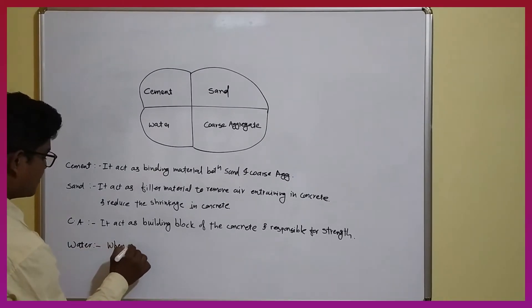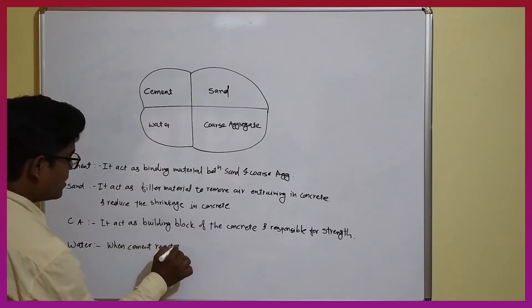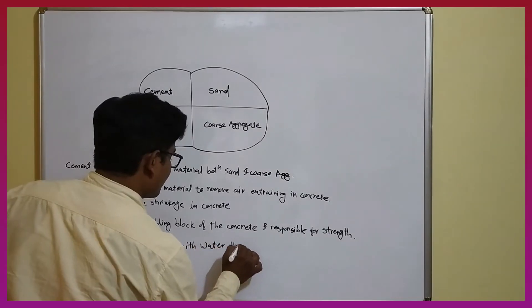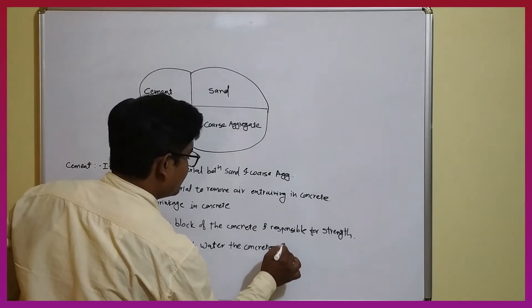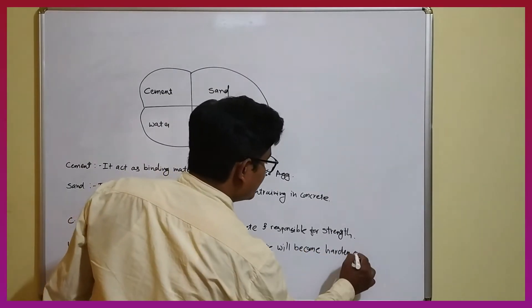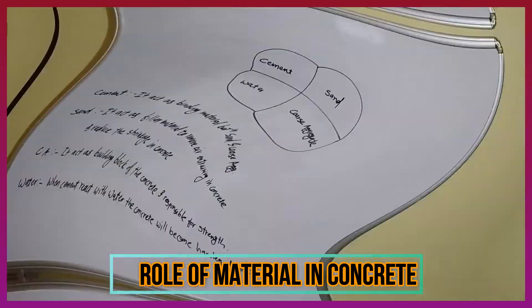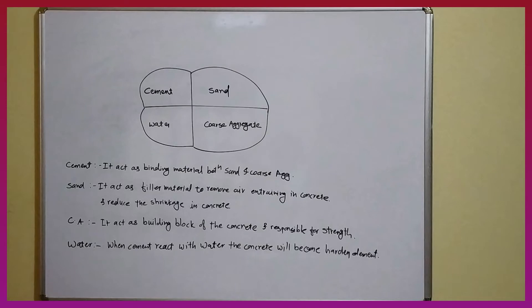When cement reacts with water, the concrete will become a hardened element. So as we know, concrete is a homogeneous mixture of cement, sand, coarse aggregate, and water — that homogeneous mixture is concrete.